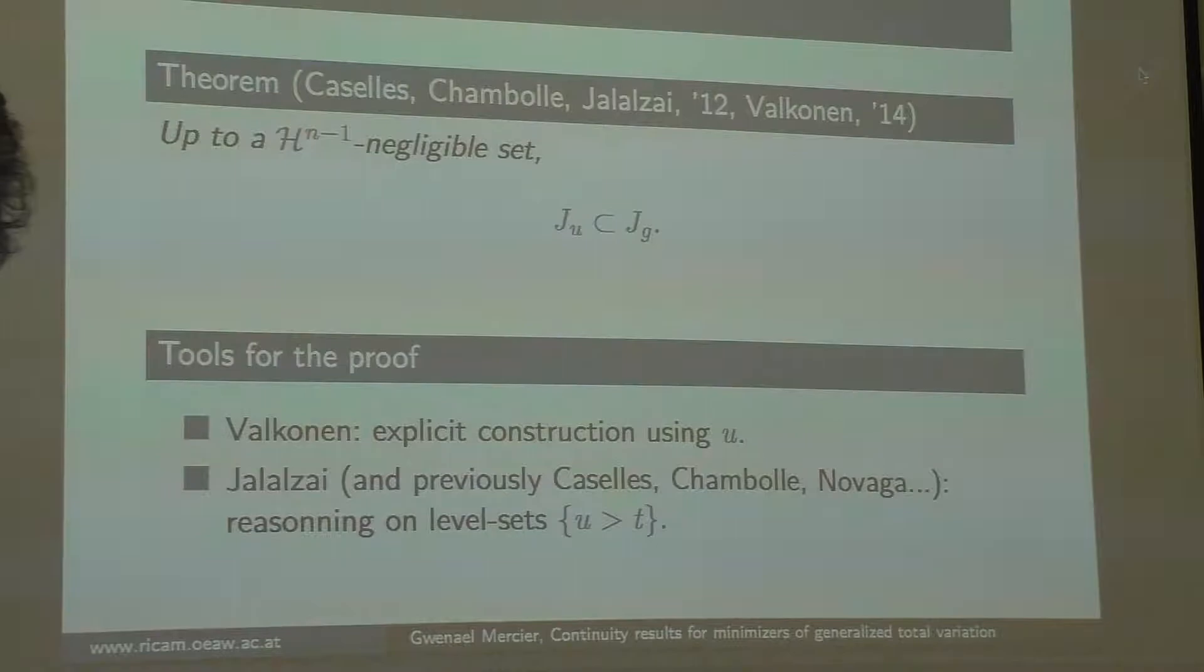The tools for the proof are a bit different. For Valkonen, it's really looking very closely at the function and modifying it, whereas Jalalzai works on the level set, so it's the method I will use now, because Chambolle was my advisor, so he told me to do so, basically.